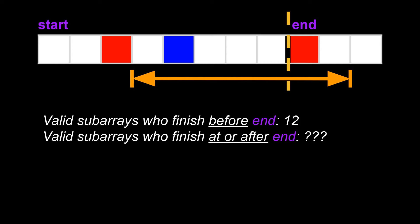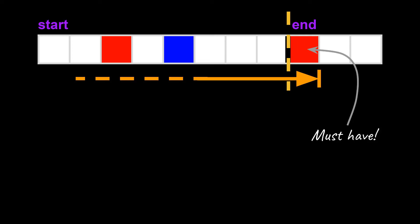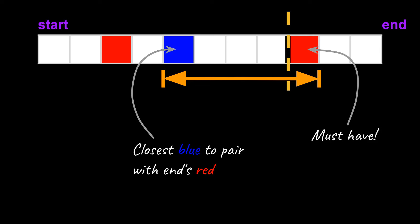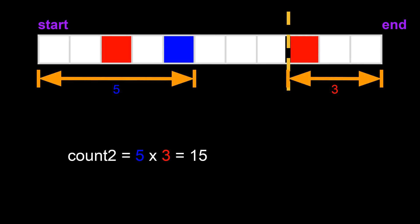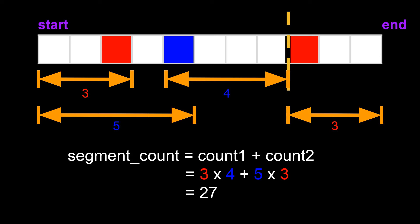Well, for starters, we know that all valid subarrays finishing at end or after must contain this second red square. If that's the case, we could pick the closest blue square to pair with this red. All valid subarrays must contain a blue and red. So if it has a red already at the end position, then the closest blue is the last one before it. Now, if we move the end index to the next black square, we can use the same formula we had before to calculate how many subarrays there are. This time, the number of valid subarrays who end at the second red square or later is 5, because that's the number of cells before the blue square, multiplied by 3, and that gives you 15.